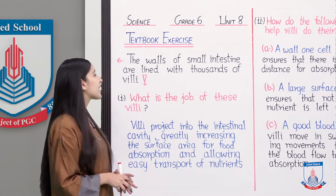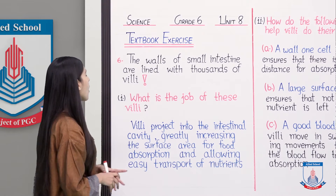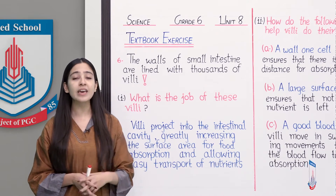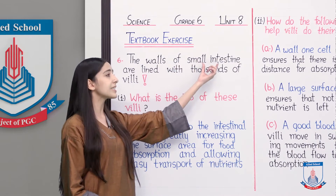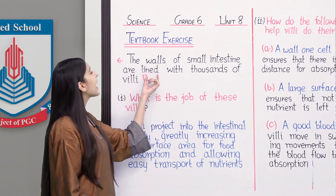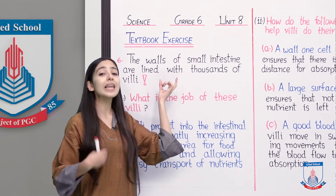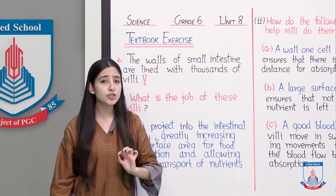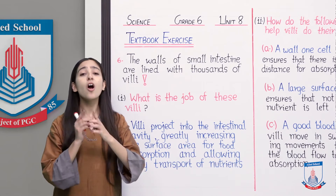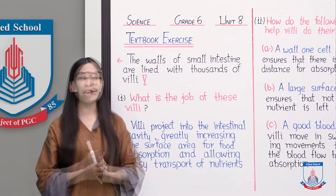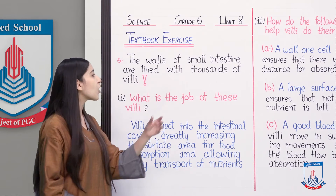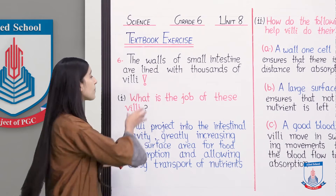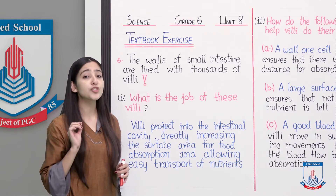Question number 6 states: 'The walls of small intestine are lined with thousands of villai.' Before asking the question, a fact has been given: the walls of the small intestine are lined with thousands of villai. Villai is a structure that has finger-like projections. The entire lining inside the small intestine consists of villai, which are these finger-like projections.